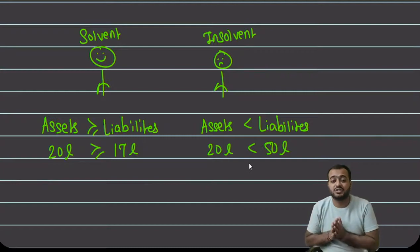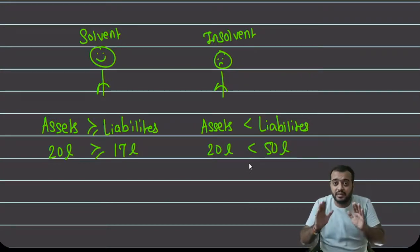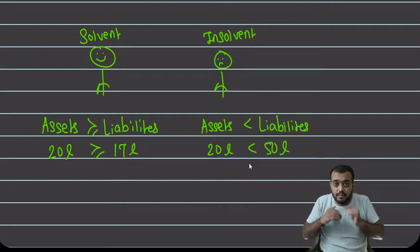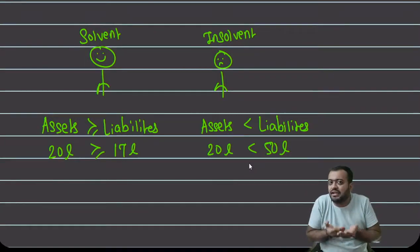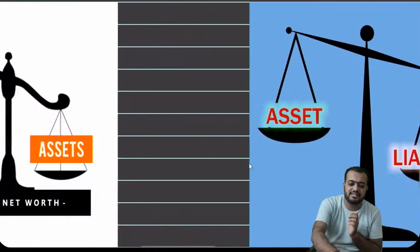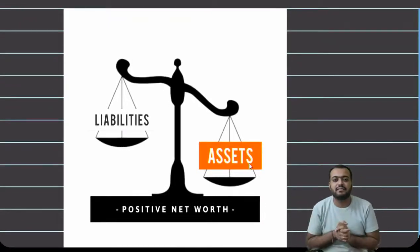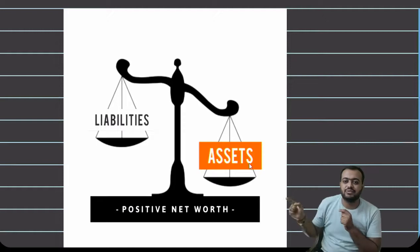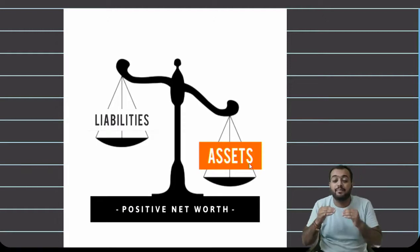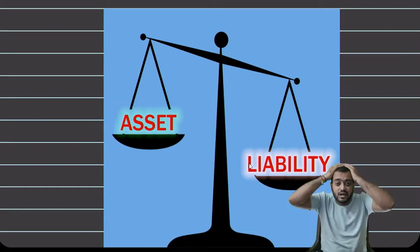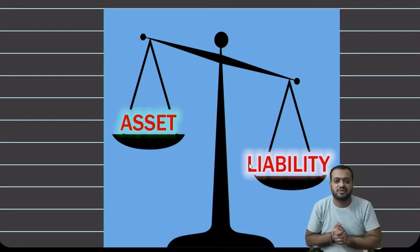और अगर किसी person को insolvent declare कर दिया जाए — तो अगर हमें उनसे लेना है तो वो डूब गए, जो हमने bad debts concept में भी देखा था। और अगर हम खुद insolvent हो गए और किसी को देने वाले थे, तो नहीं दे पाएंगे। Summary: जहाँ assets ज़्यादा हैं — यह solvent person की निशानी है, और इसे positive net worth भी बोलते हैं। Net worth मतलब assets minus liabilities — positive net worth है। और जहाँ liability ज़्यादा है, कर्ज़ा ज़्यादा है — यह insolvent person है — negative net worth।